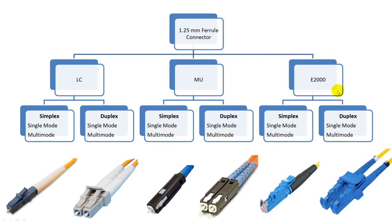Another major type is called E2000, also known as the LX5 connector. It looks like an LC connector with a shutter over the end of the fiber. E2000 connectors are available in simplex, single fiber, and duplex, 2 fiber versions. Both types have single mode and multimode fiber versions available.